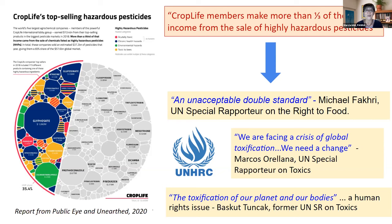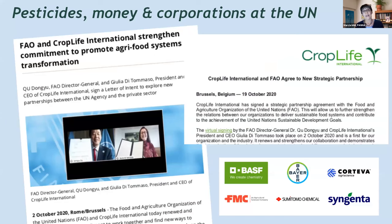Indeed, 40 years ago, PAN's founders declared that the pesticide problem was part of a larger structural problem, specifically naming corporate power and influence over governments, as well as pressure from international financial institutions and so-called development institutions. Today we are seeing even more corporate overreach at the UN, where the Food and Agriculture Organization last year announced plans to formalize a partnership with none other than CropLife International, while simultaneously backpedaling on its commitments to agroecology.